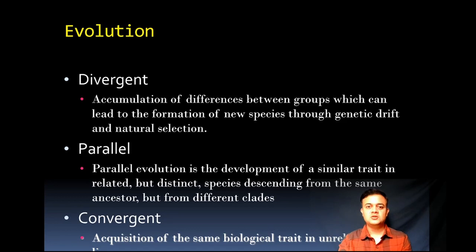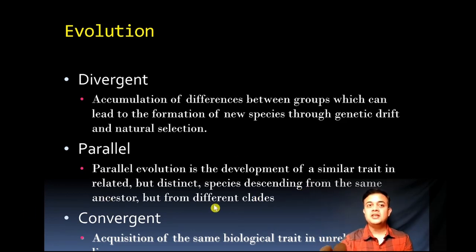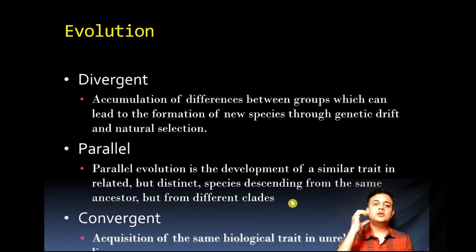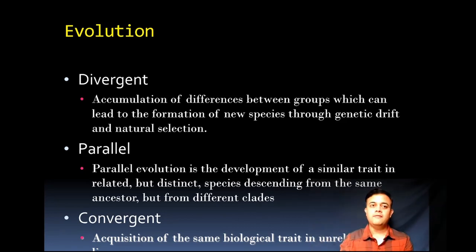Parallel evolution is the development of similar traits in related but distinct species descending from the same ancestor but from different clades. The same kind of traits evolving in two different clades is what we call parallel evolution. The third term is convergent evolution, which is the acquisition of the same biological trait in unrelated lineages.